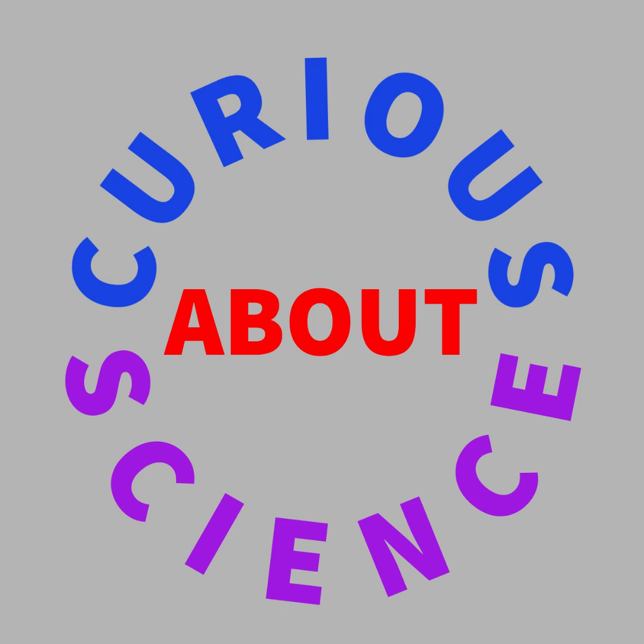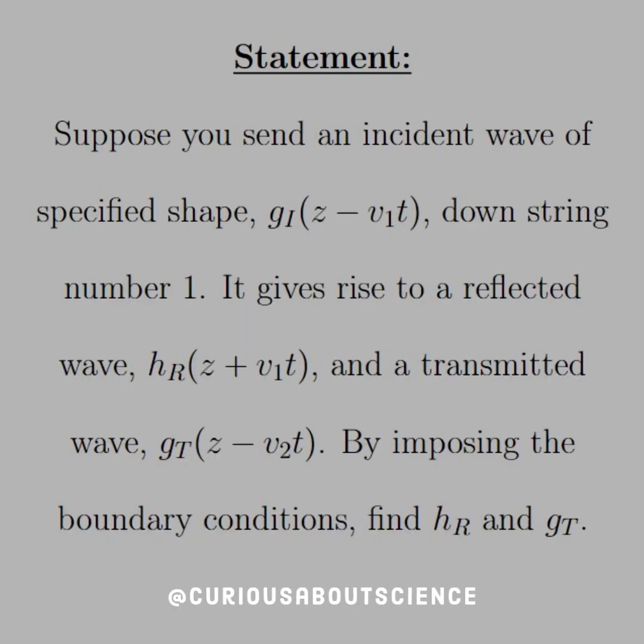All right, so our statement now is suppose you send an incident wave of specified shape g_I of z minus v_1 t down string number one. It gives rise to a reflected wave h_R of z plus v_1 t and a transmitted wave g_T of z minus v_2 t. By imposing the boundary conditions, find h_R and g_T.